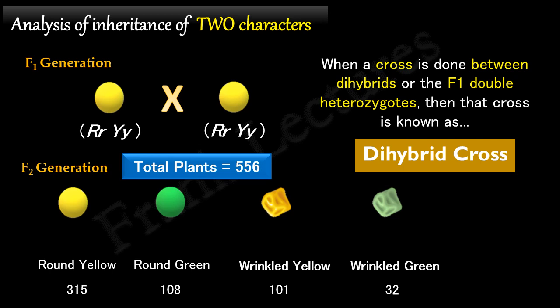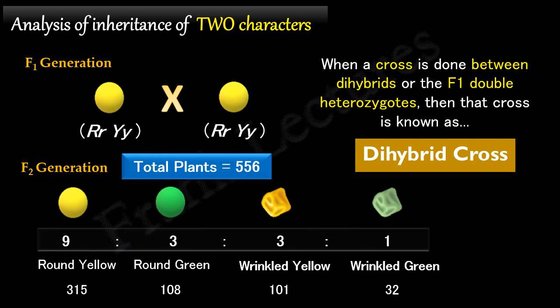Thus, Mendel obtained four phenotypes. When he calculated the ratio of these phenotypes, it came very close to 9:3:3:1.